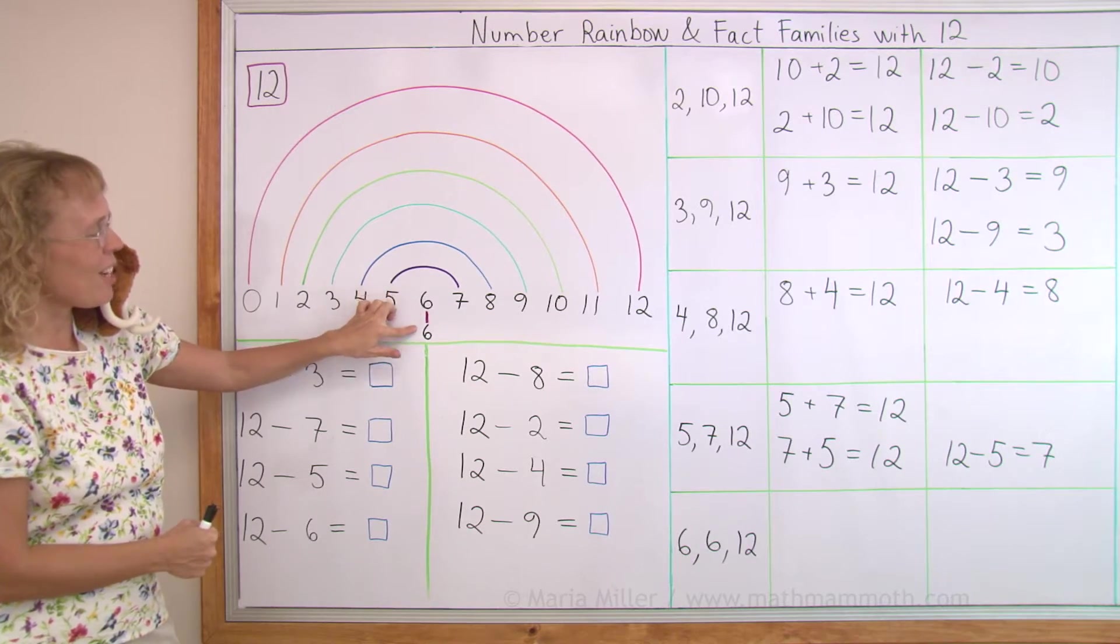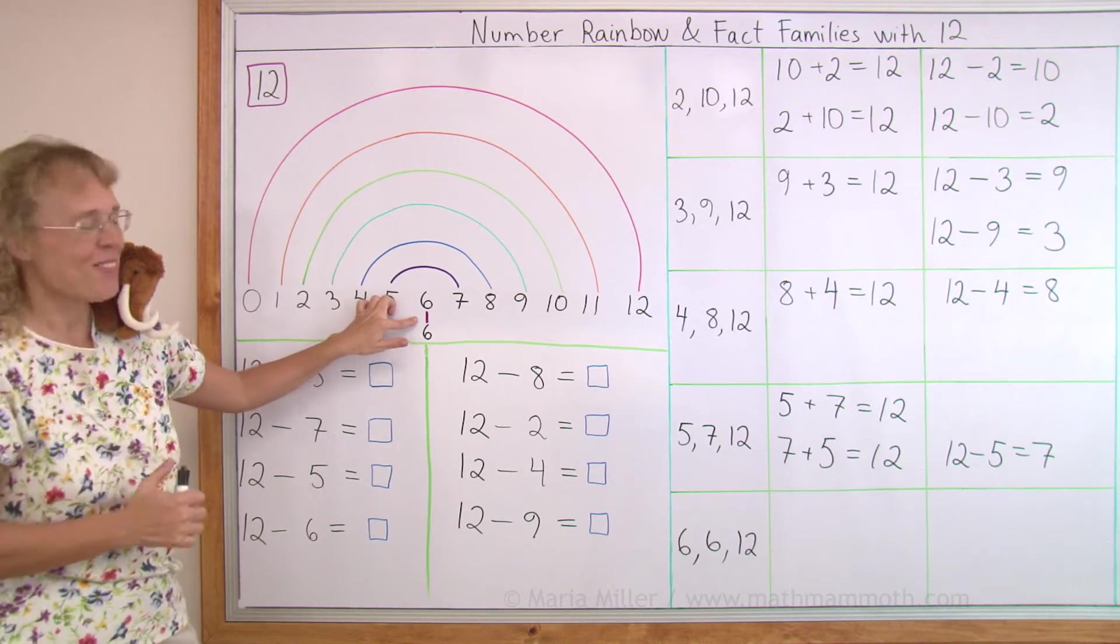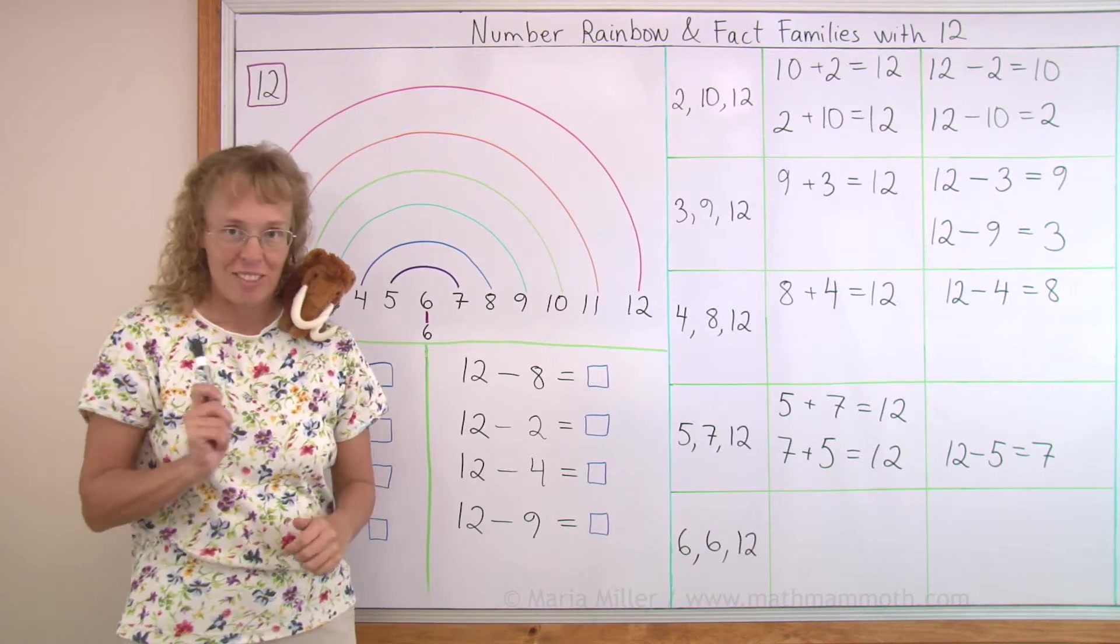And then lastly in the middle 6 and another 6. So this is not an arc in the rainbow, it's just kind of like an extra arc, extra line. And let's look at the fact families next.